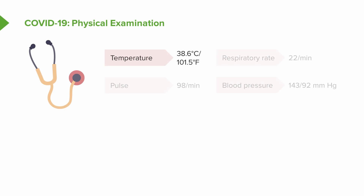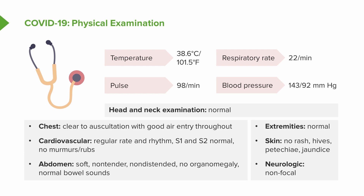On physical examination, Mr. Lecturio is febrile at 38.6 degrees Celsius, somewhat tachycardic with a heart rate of 98, and tachypneic with a respiratory rate of 22. His blood pressure is elevated at 143 over 92, suggesting it may not be as well controlled as he thinks with losartan. The rest of his exam is normal at this point — very typical for early-onset COVID-19 as well as other viral respiratory infections. His lungs are clear to auscultation with good air entry throughout.